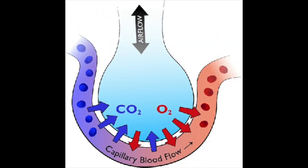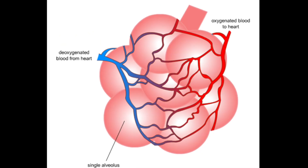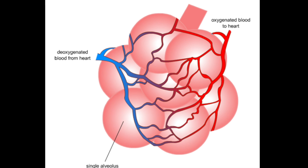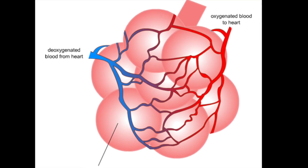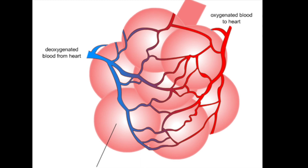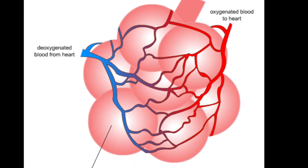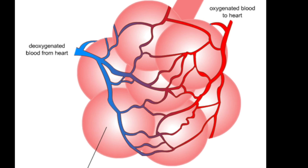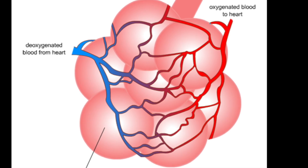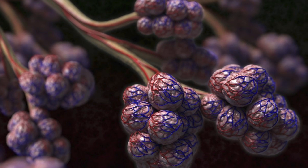Having a large surface area means that there is more space for diffusion to occur. Furthermore, being thin means that it provides a faster diffusion path. Having an efficient blood supply in animals means that the concentration gradient for diffusion is maintained at all times, which means that diffusion can occur quicker, as the larger the concentration gradient the quicker diffusion occurs.